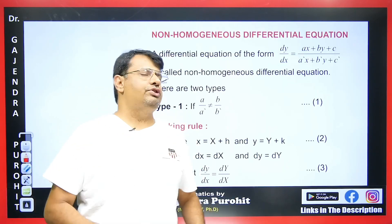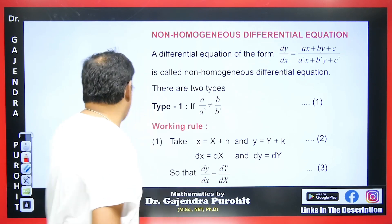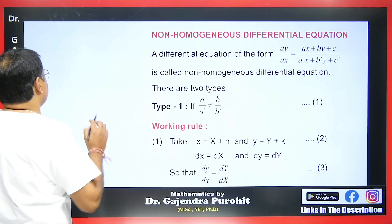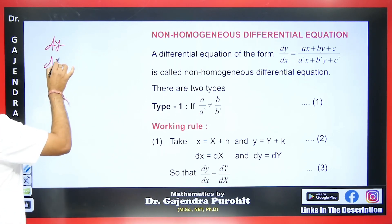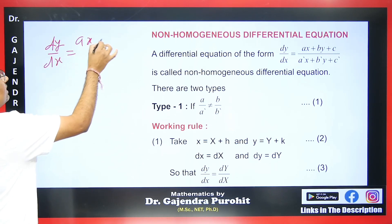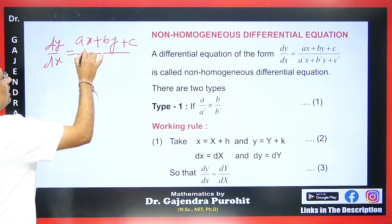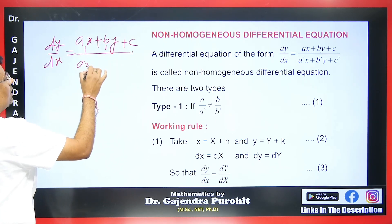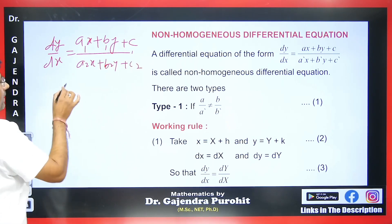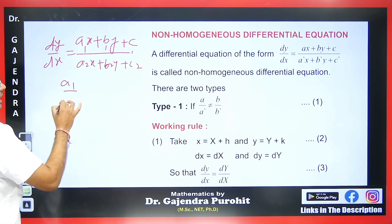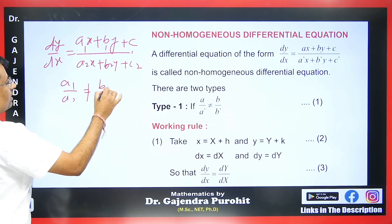Here we have a non-homogeneous differential equation that can be reduced to a homogeneous differential equation. Whenever we have a differential equation given as dy/dx equals (a1x + b1y + c1) / (a2x + b2y + c2), if the coefficient ratio a1/a2 is not equal to the coefficient ratio of the y terms, then the equation is reducible to homogeneous.